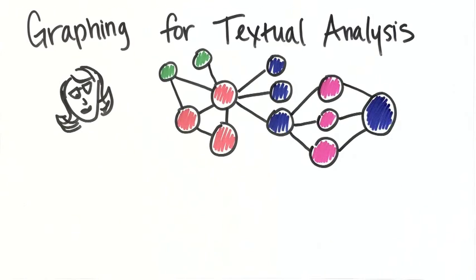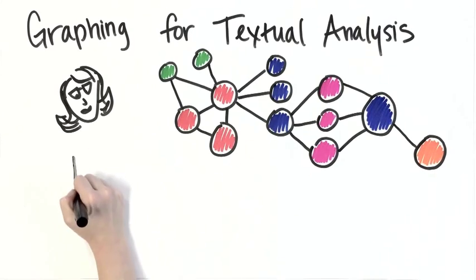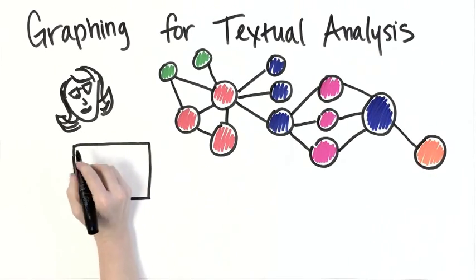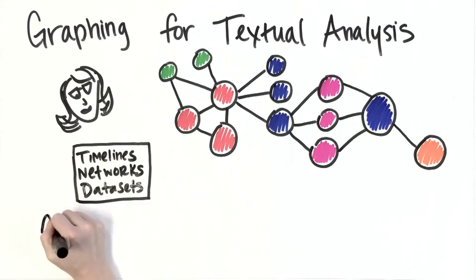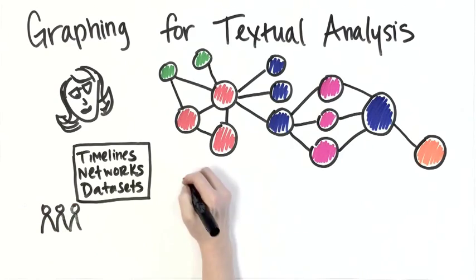And before we knew it, the seemingly simple story became a complex network of interconnections, suggesting a deeper meaning beyond the surface narrative. Good readers have always been close readers. Graphs can help map the connections between things, whether it